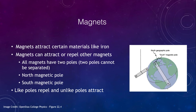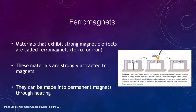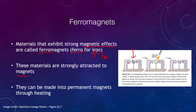Let's look at the idea of a ferromagnet — materials that exhibit strong magnetic effects. Ferromagnet relates to iron, whose chemical symbol is Fe. These are things that are strongly attracted to magnets and can be made into permanent magnets. You can take a bar of iron, place it in a strong magnetic field, heat it up and give it a quick tap, and as it solidifies it will become a permanent magnet with a north and a south pole that works just like any other magnet.